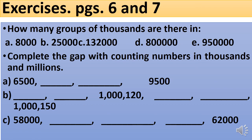Now for exercises, open to pages 6 and 7 of your Learn Mathematics textbook — actually page 5. The questions ask: how many groups of thousands are there in 8,000; 25,000; 132,000; 800,000; and 950,000? Then complete the gaps with counting numbers in thousands and millions. Bravo — have a great day and stay safe!